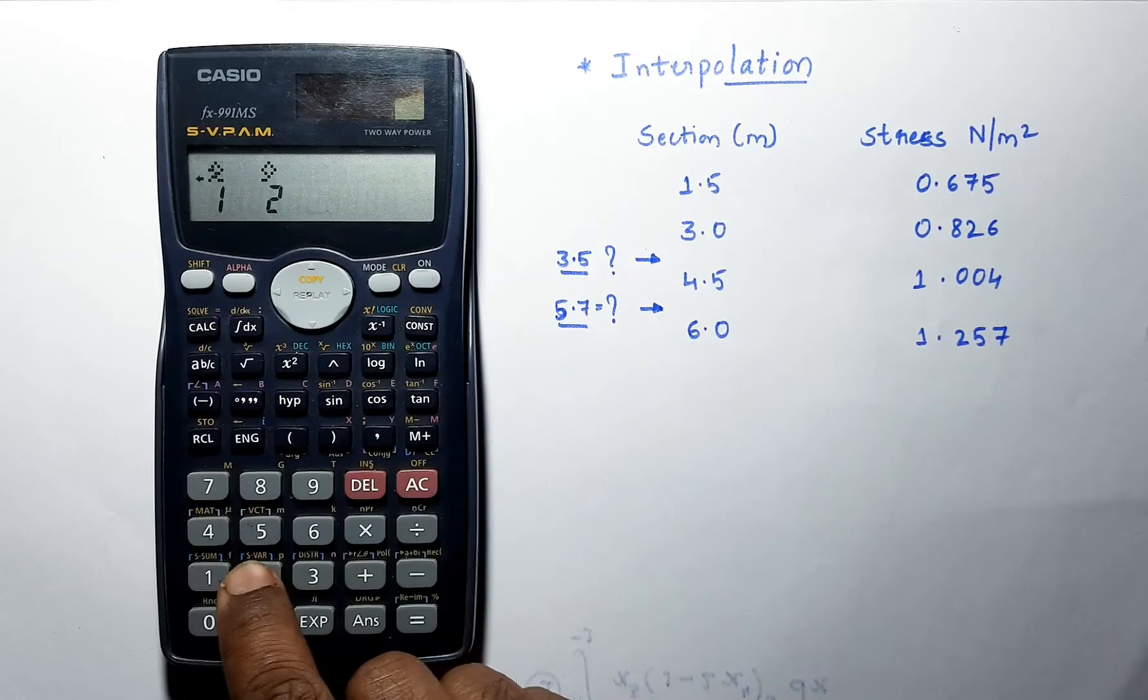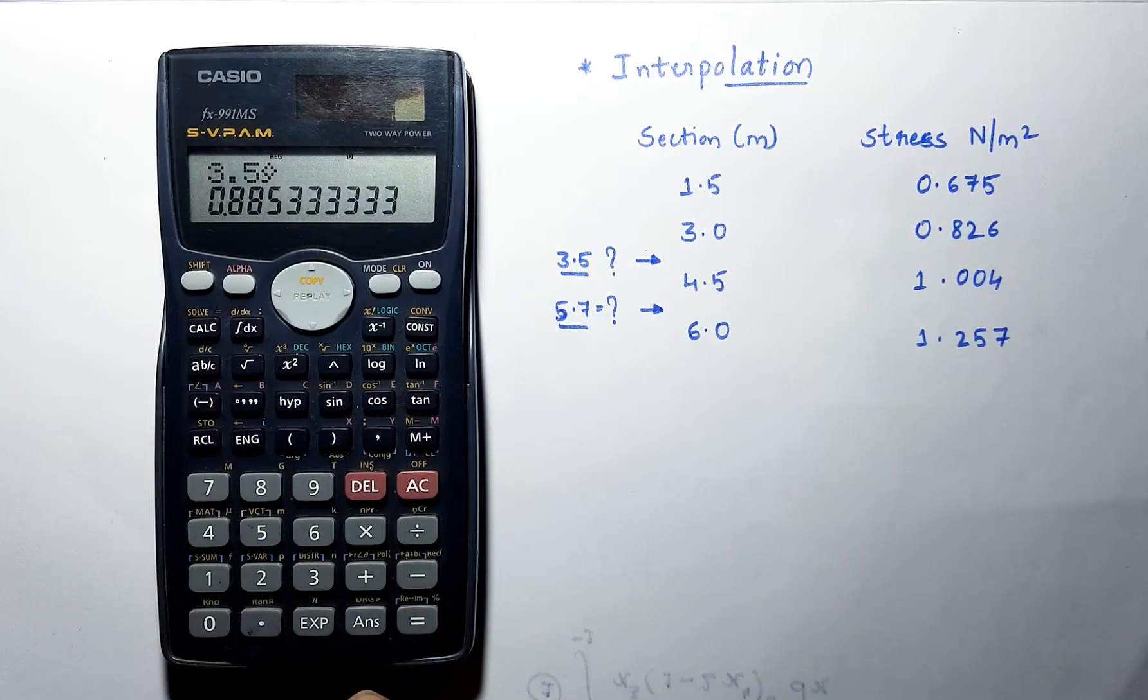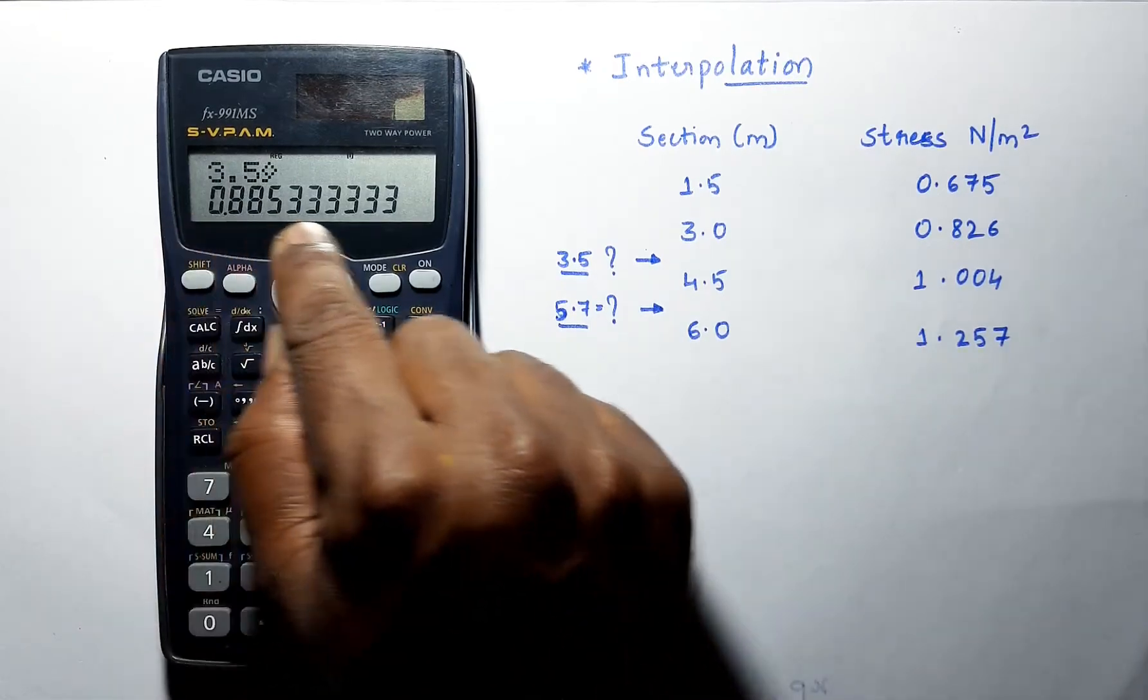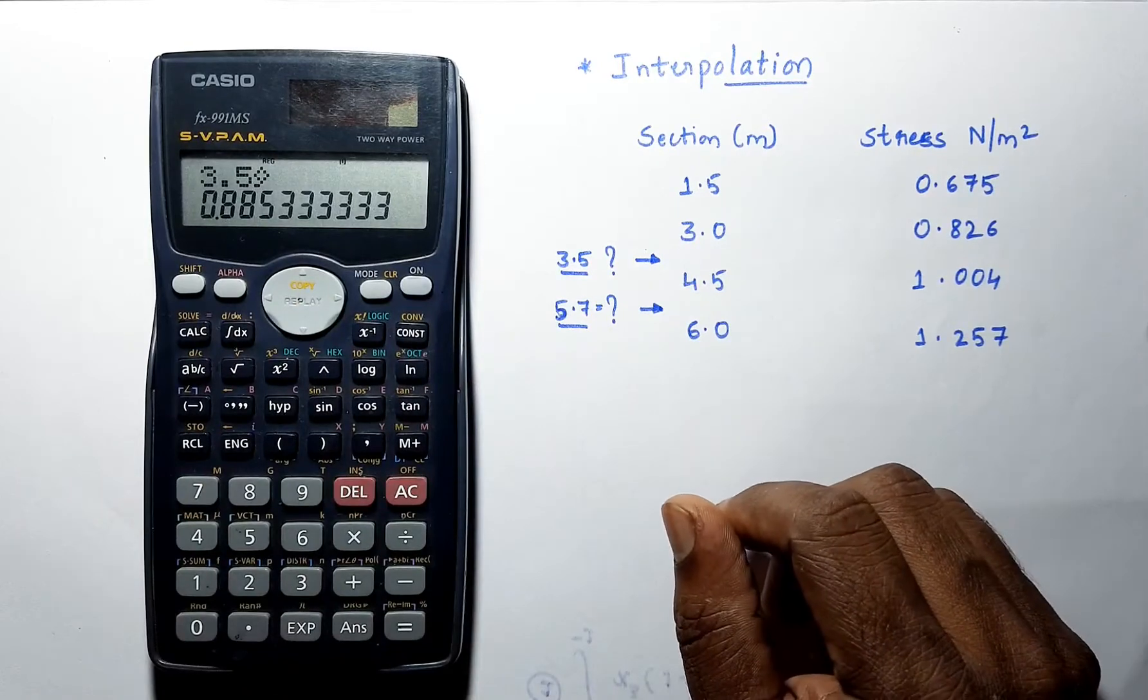Press 2 and press equals. Now we are getting the stress value for 3.5 meters, which is 0.8853.